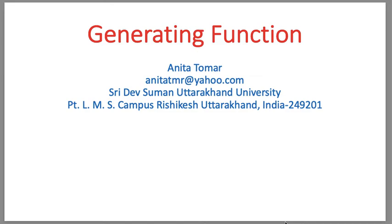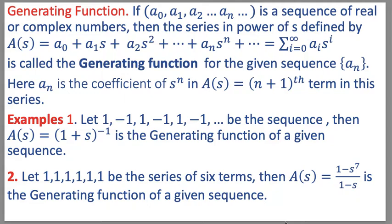Good morning. Today we will study generating functions. Suppose a0, a1, a2, ..., an is a given sequence of real numbers or complex numbers. Then the series in power of s, defined as a(s) = a0 + a1·s + a2·s² + ... + an·sⁿ + ..., is called the generating function for the given sequence an. Here an is the coefficient of sⁿ in the (n+1)th term of this series. In short, we write it as sigma i=0 to infinity of ai·s^i.